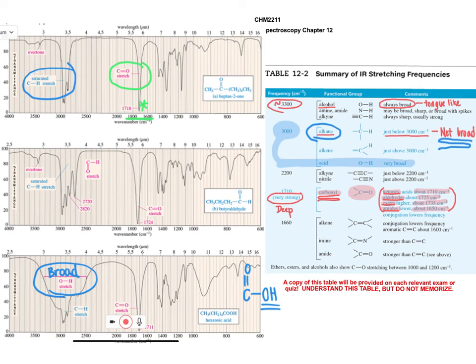In this spectrum for hexanoic acid, since there is also a carbonyl group present in the carboxylic acid group, as I've circled there in the middle bottom of your screen, we also see the carbonyl group showing up here. And in this case, the carbonyl group is showing up at 1711 as it's labeled.